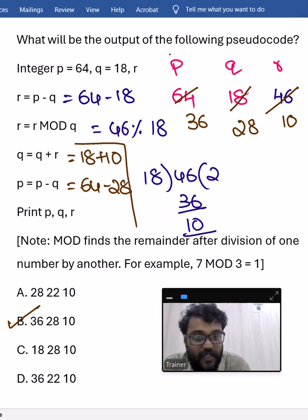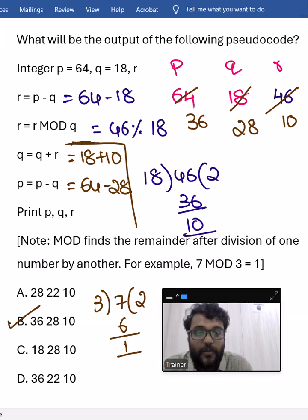It will find the remainder after division of one number by another. 7 mod 3 is nothing but 1. So 3 times 2 is 6, remainder is 1. So this mod is the modulo symbol. In all programming languages, this percentage is the modulo symbol. When x is divided by y, what is the remainder? x percentage y, when x is divided by y, what is the remainder?